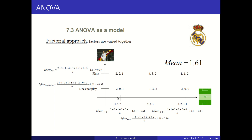We can do the same with the field positions. For 4-4-2, we average the scores and subtract the overall mean of 1.61. The effect of this level is minus 0.28. For 4-3-3, it is 0.81, and for 4-2-3-1, it is minus 0.61. The addition of these three numbers should add up to zero by construction. This particular way of calculating is only valid when there is an equal number of matches in each cell.